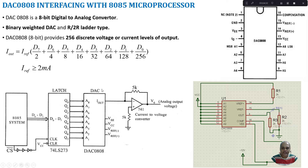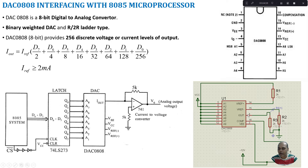We can also interface using an 8255 programmable peripheral interface. But first, let me discuss another methodology to convert current into voltage. Here I have shown a circuit diagram where data coming from the microprocessor — with all bits set to 1 connected to VCC — generates a corresponding output current. This output current flows through a resistor, and we get the voltage across that resistor.